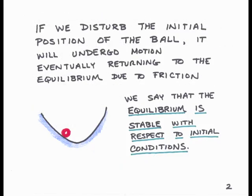Here is our first test. We'll disturb the initial position of the ball, and then it will undergo some motion, responding to this initial condition. Ultimately, it will return to the bottom, to the equilibrium, due to friction. We say that this equilibrium is stable with respect to initial conditions, because it returns back to the equilibrium after the initial conditions have been disturbed from the equilibrium.